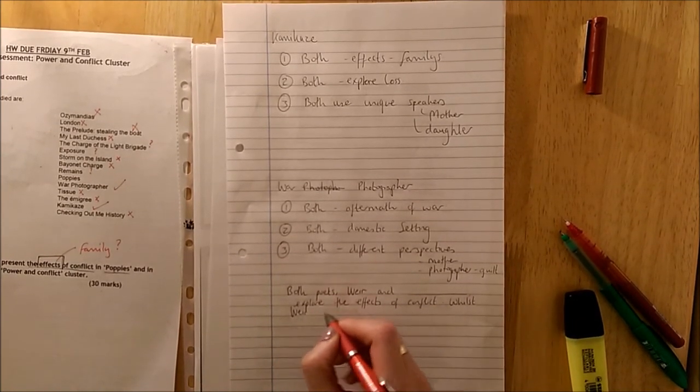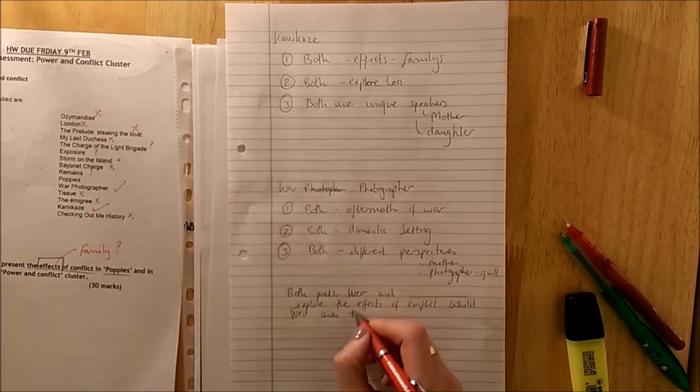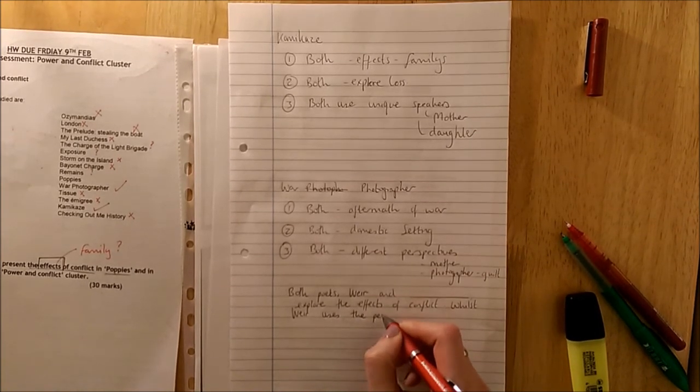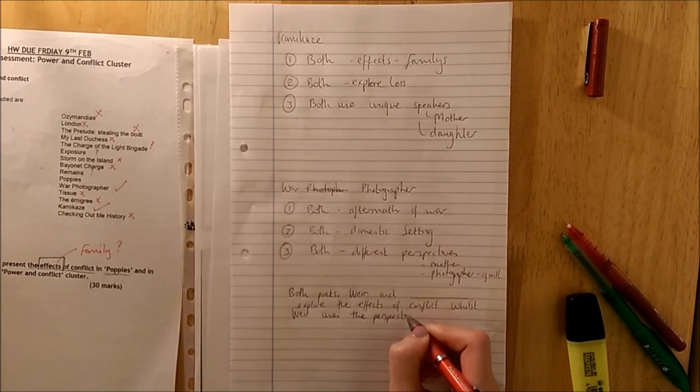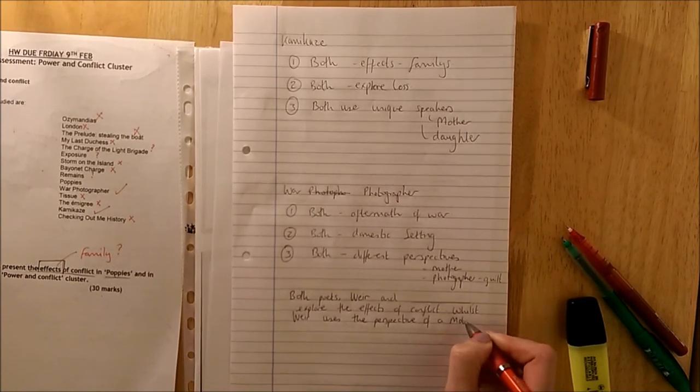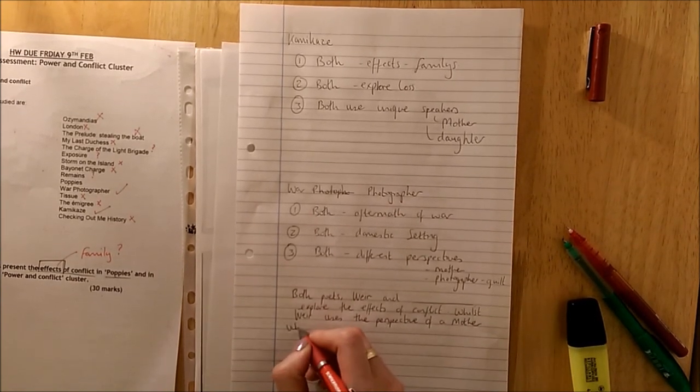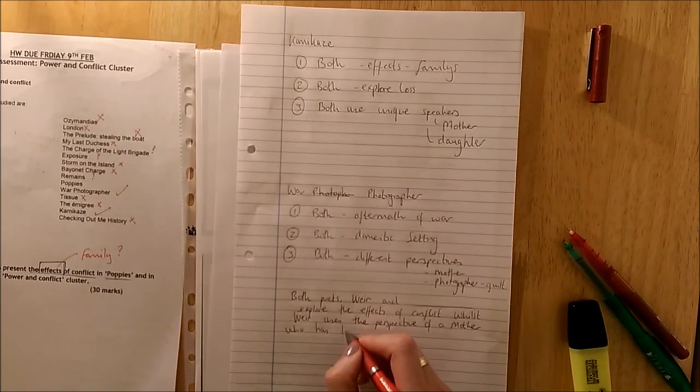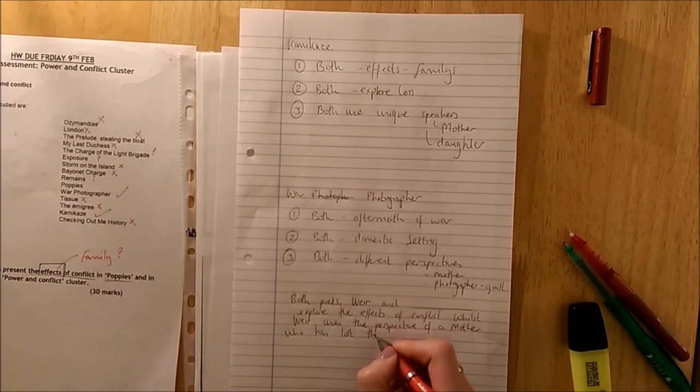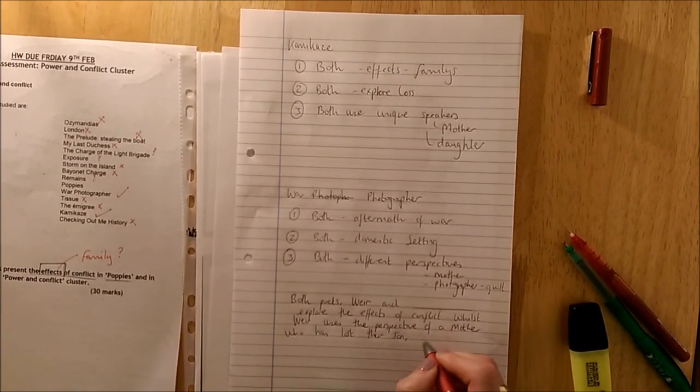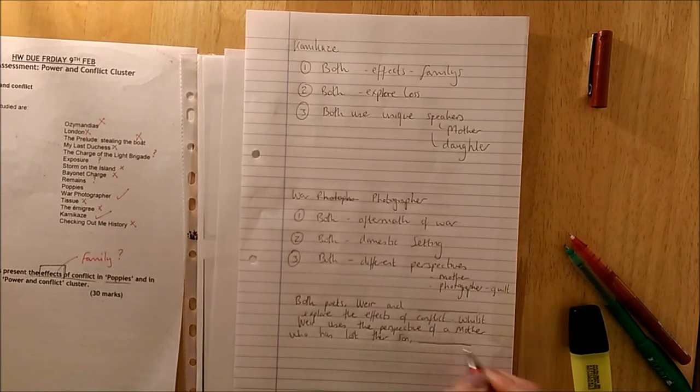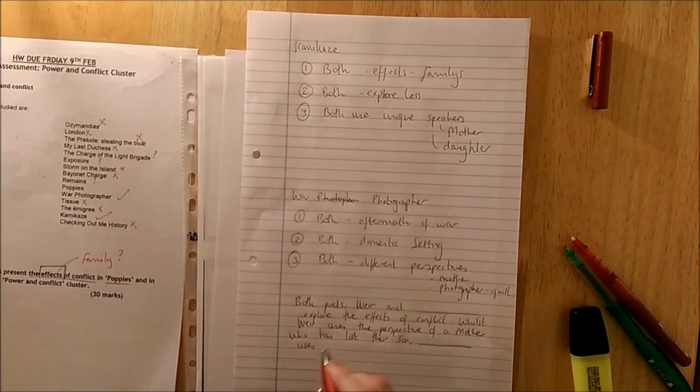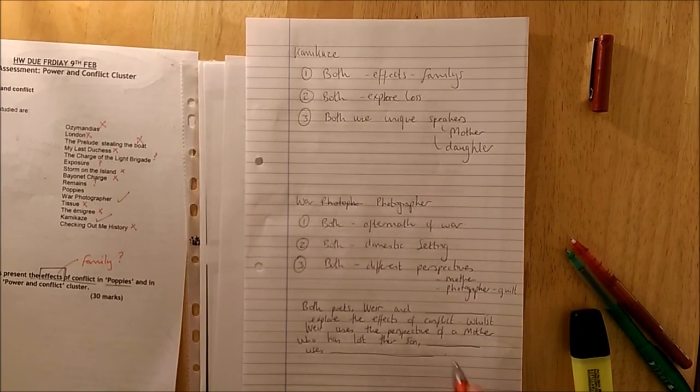And then you've got your similarity. But we now need to show that we also recognise that they do this same exploration of this same theme but in slightly different ways. I'm going to go with the perspectives here. So whilst Weir uses the perspective of a mother who has lost their son, and then your chosen poet uses and what did they use to tell their story.